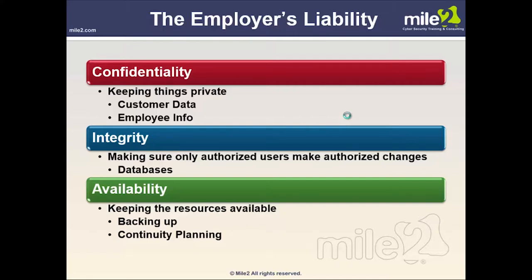Availability means we keep resources available through backups, continuity plans, and so forth. We generally provide availability through clustering, load balancing, redundancy via multiple power supplies, multiple ISP providers, RAID — your redundant array of inexpensive or independent disks — and similar approaches. Remember that CIA stands for Confidentiality, Integrity, and Availability, and know how we provide each.